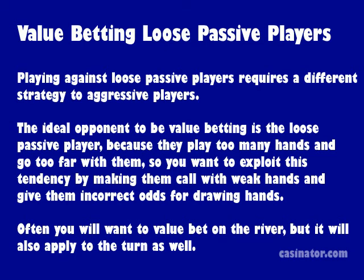Playing against loose passive players requires a different strategy to aggressive players. The ideal opponent to value bet is the loose passive player because they play too many hands and go too far with them. You want to exploit this tendency by making them call with weak hands and giving them incorrect odds for drawing hands.